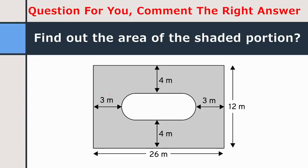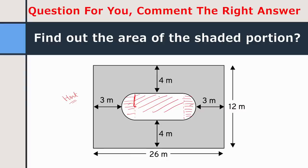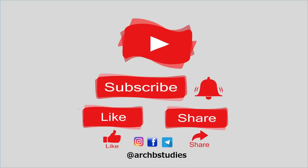Now here is a question for you — comment the right answer in the comment section. This is about finding the area of the shaded portion. Hint: you can divide this into three parts — it becomes a rectangle in the middle and two semicircles on the sides. You can find the radius and then calculate the area of each part. Comment below! If you found this video helpful, please like it, share with friends, and comment on what topic you want for the next video.